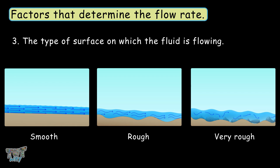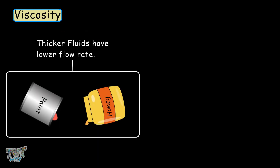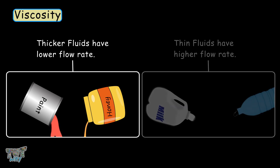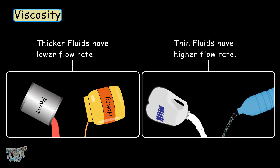The next characteristic of a fluid is viscosity, or the type of fluid. This means how thick or thin the fluid is. Thicker fluids like honey and paint will have a slower flow rate, whereas thin fluids like water, juice, and milk will have a higher flow rate. This is called viscosity.